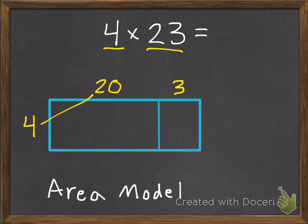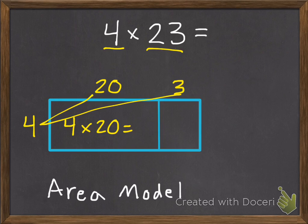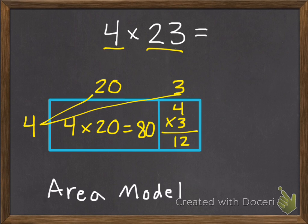So this larger section is 4 by 20, so 4 times 20. And our smaller section is 3 by 4. So 4 times 20 equals 80, and 4 times 3 equals 12. Then we add those two parts together to get our whole. So 80 plus 12 equals 92.